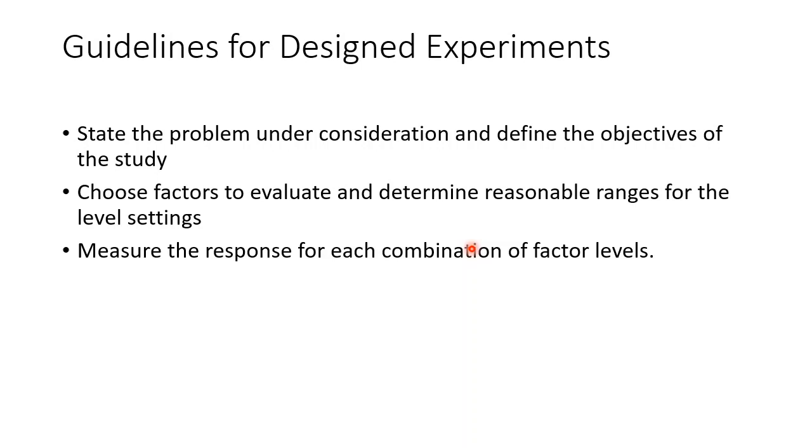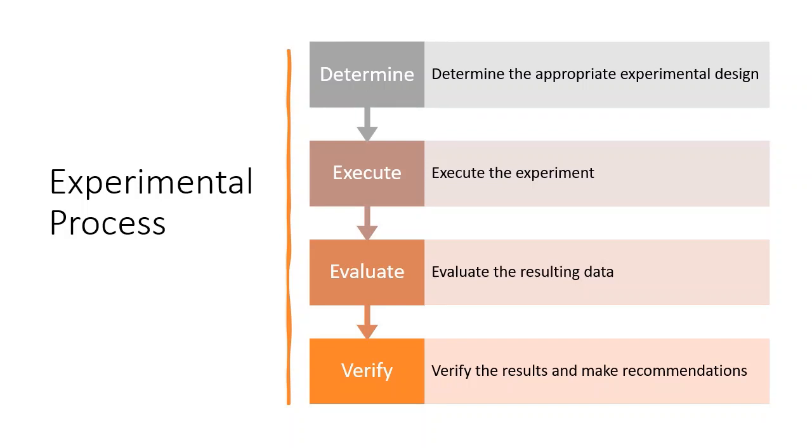Although design experiments have a wide range of applications, consider these general guidelines when using them. We must understand our problem so that we can define the objectives of study. They include selecting appropriate responses. We then choose the factors we want to evaluate and determine reasonable ranges for each. The response is what we will measure for each combination of the factor levels. In this chapter, we assume all responses are continuous. We need to determine what type of design to use for our experiment based on the factors we are investigating and the response we are measuring. After selecting and designing, then we execute the experiment and evaluate the data using statistical and graphical techniques.